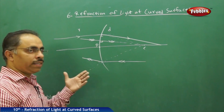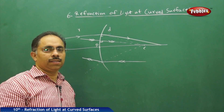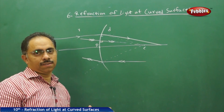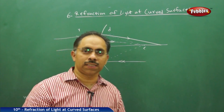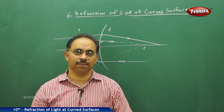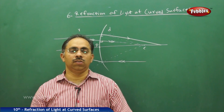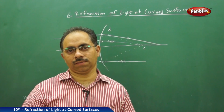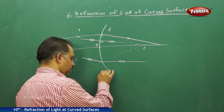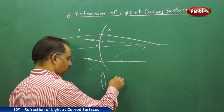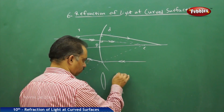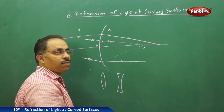These are the three cases to consider when discussing refraction of light at curved surfaces. Generally, what type of curved surfaces do we encounter in daily life? The most common example is a lens. In lenses, we have different types — the most familiar are convex lenses and concave lenses.